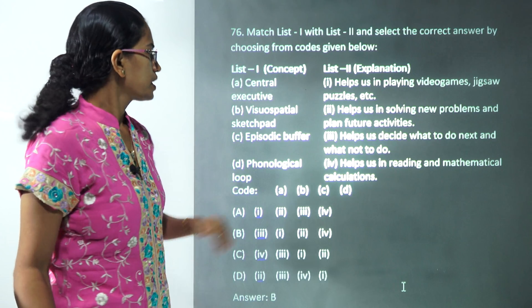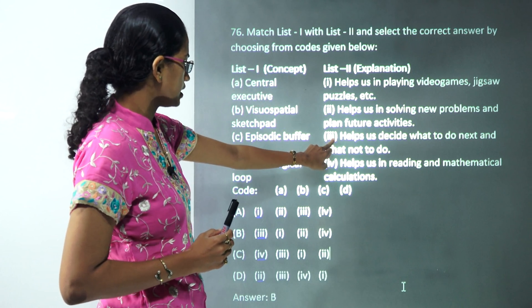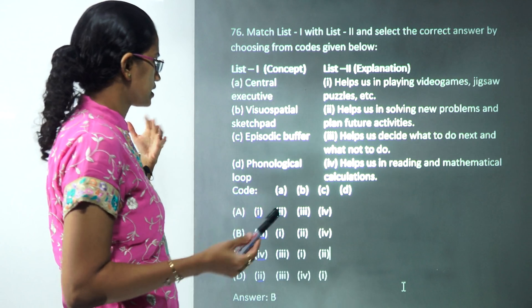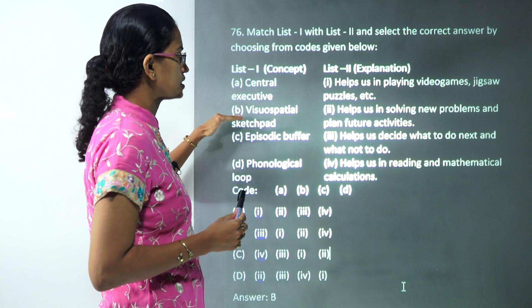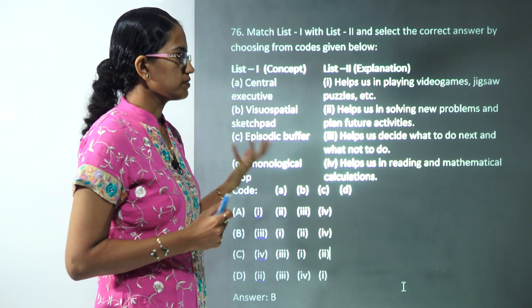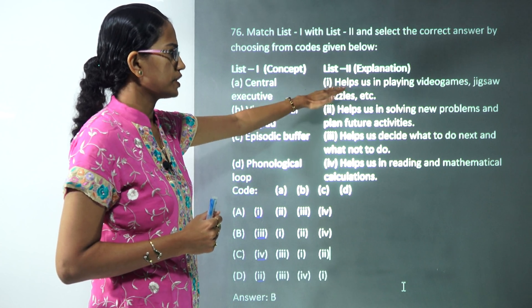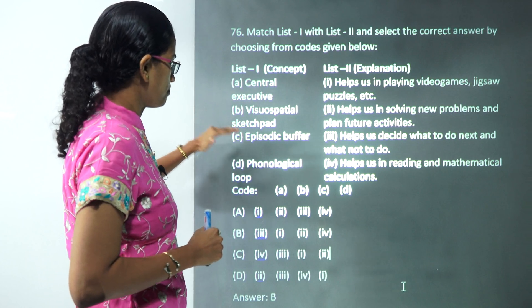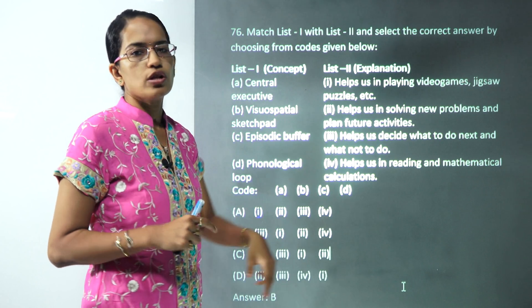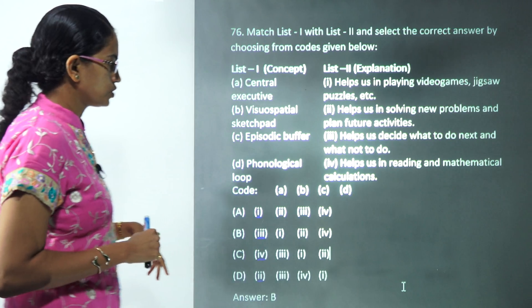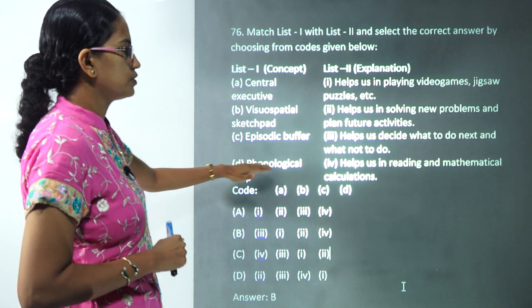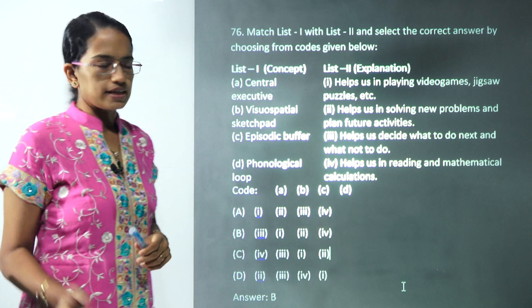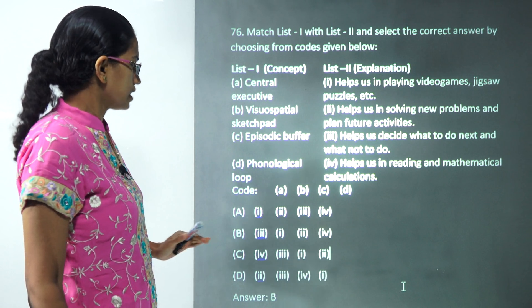Three is the correct match for the first one. 'Visuospatial sketchpad,' as the name suggests, involves visual skills — video games and zigzag puzzles are examples. 'Episodic buffer' helps you solve new problems and plan future activities, and 'phonological loop' helps you read and do mathematical calculations.